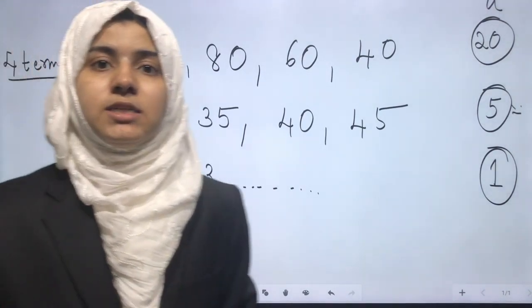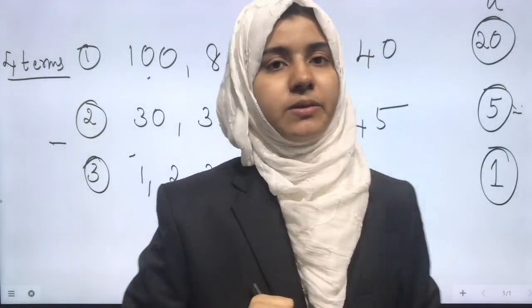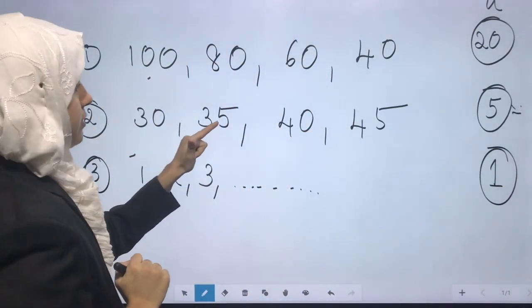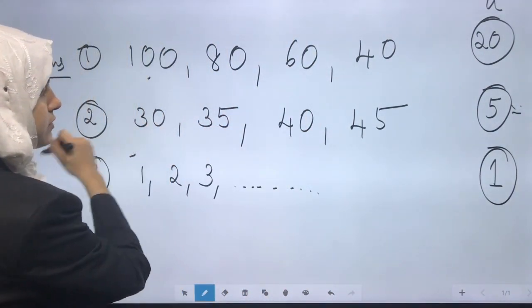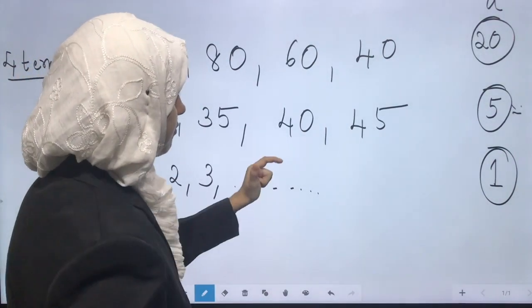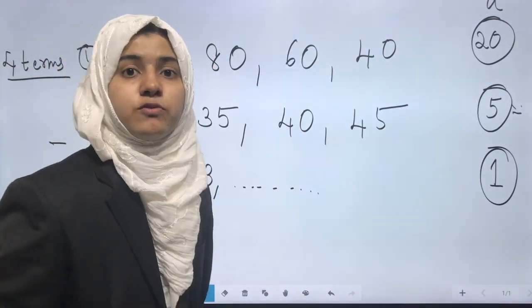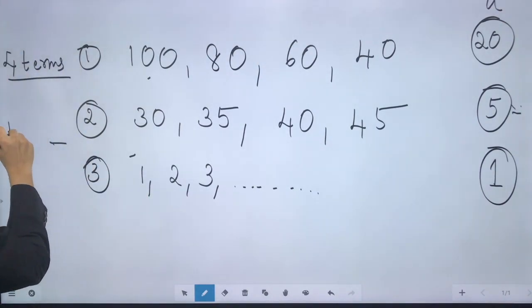Now how many terms are there in the second AP? 30, 35, 40, 45. So 30 is the first term, 35 second term, 40 third term, 45 fourth term. So there are four terms in the second AP.